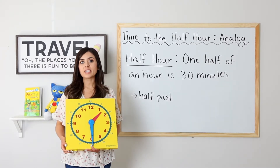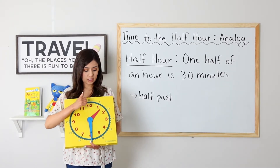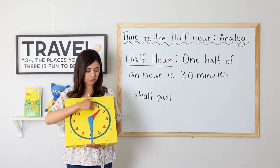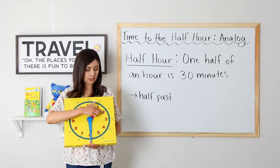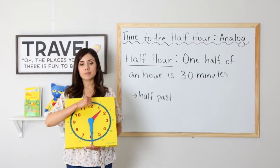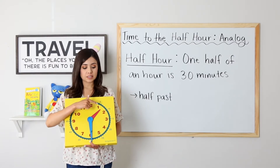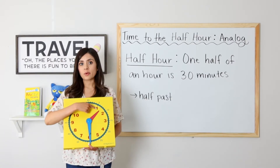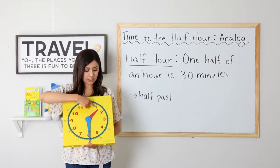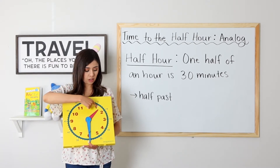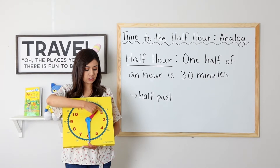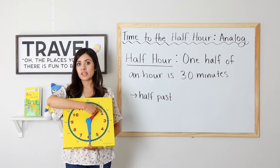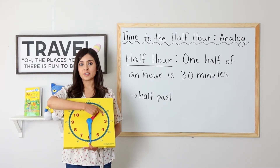Let's go ahead and take a look at our hour hand. It is pointing between the one and the two. This means that it is still one. When the hour hand hits the one, it is one all the way from here all the way until it touches the two. If it has not touched the two yet, it is still one.